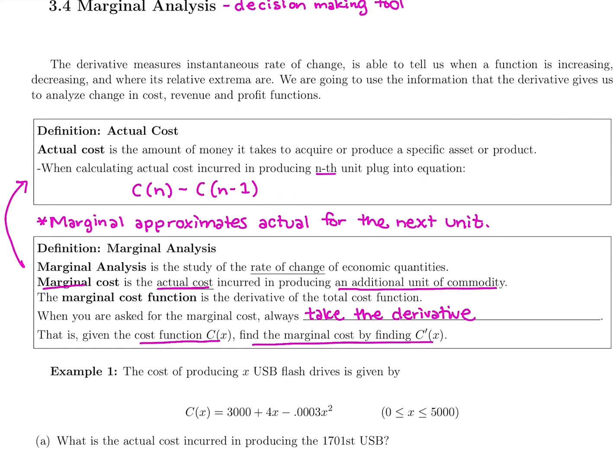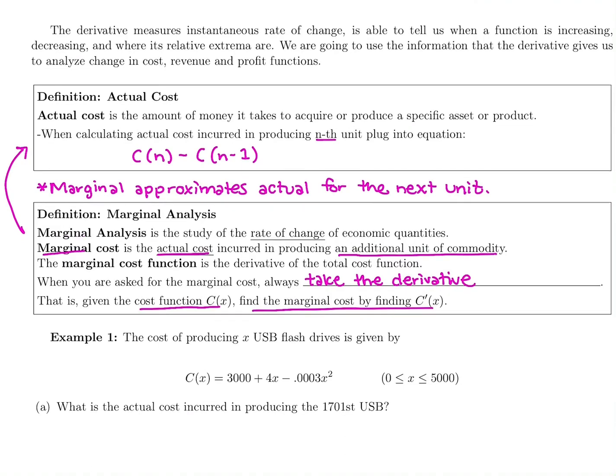If you take marginal revenue and plug in 22, that marginal revenue approximates the actual revenue from selling the 23rd unit, always the next unit. We're going to get into several examples of that.